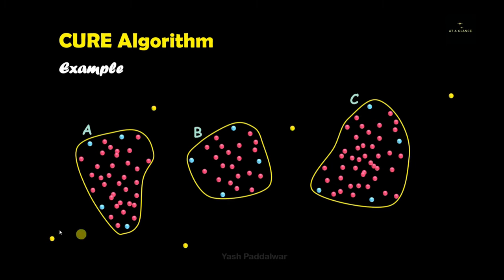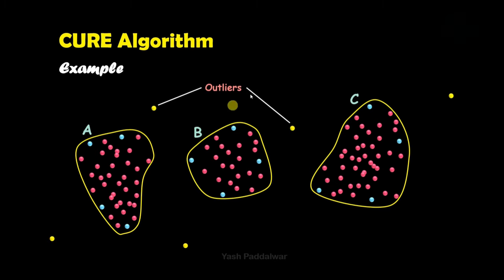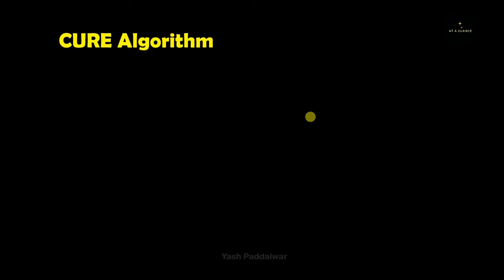You can notice that some data points are not part of any cluster. These data points are nothing but outliers — data points that behave abnormally compared to those inside the clusters. Each of these outliers is very far away from every single cluster. I hope the entire example is clear.